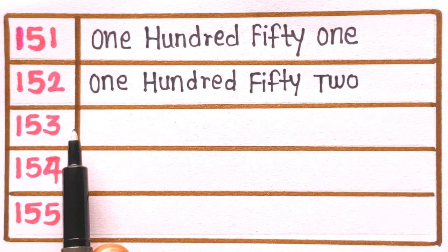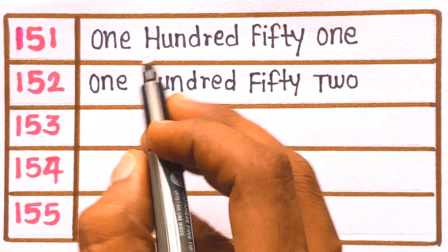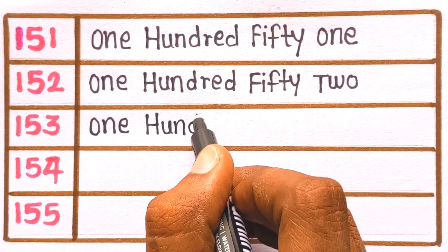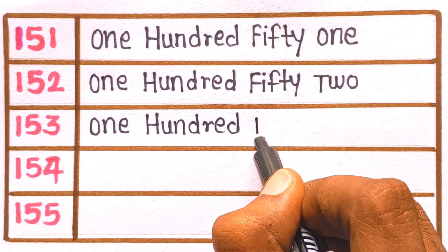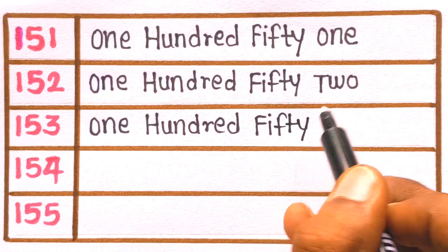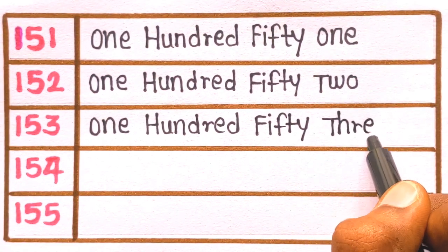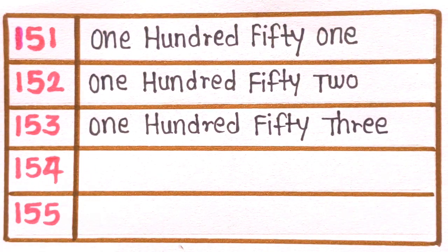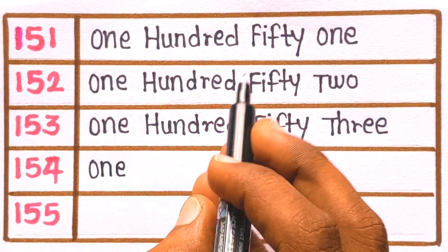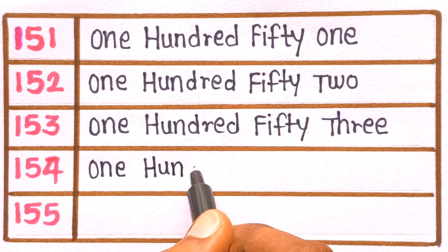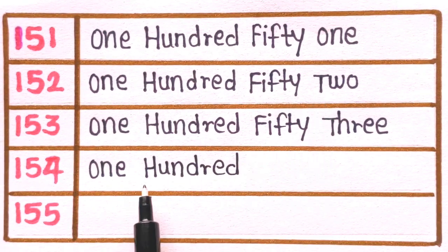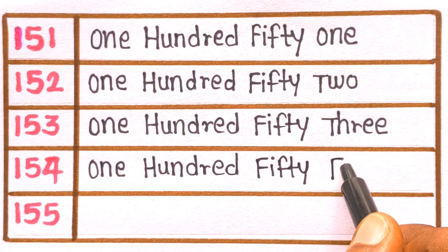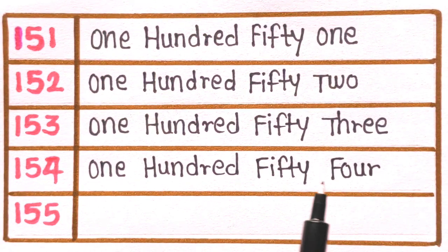Next is 153. O-N-E, one. H-U-N-D-R-E-D, one hundred. F-I-F-T-Y, fifty. T-H-R-E-E. 153 is one hundred fifty three. Next, 154. F-O-U-R. 154 is one hundred fifty four.